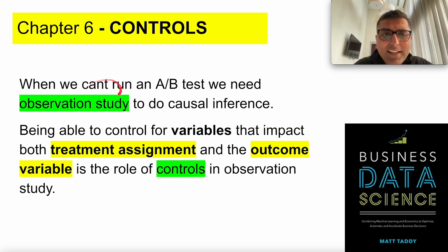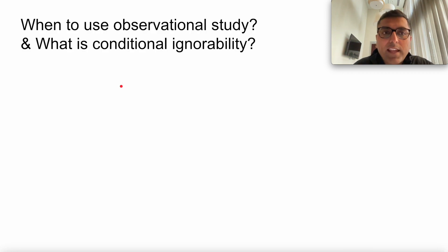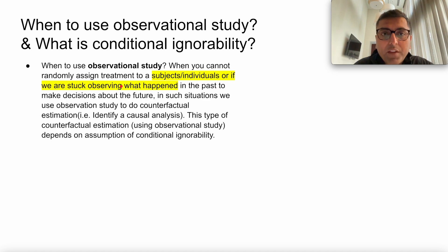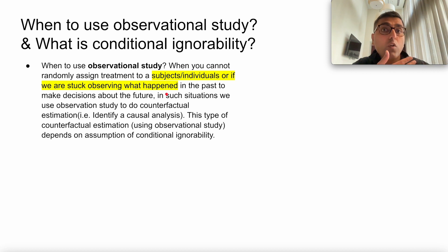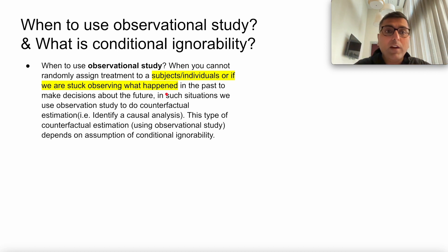What is an example of when we cannot run an A-B test? Let's say you're trying to make a business decision and you have data from the past, trying to use that data to make future decisions. You can't go back into the past and run an experiment — you just have past data. You might know what was the trend in sales growth when certain decisions were made. Something in the past is what you need to use to make decisions for the future.